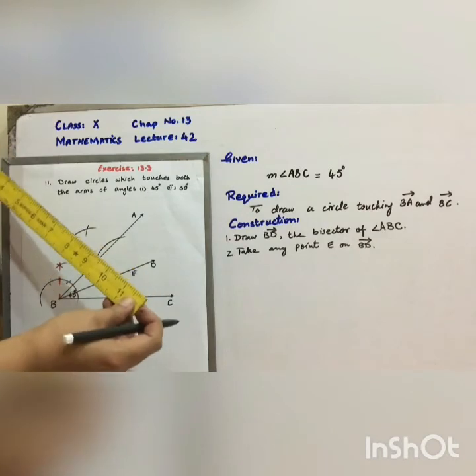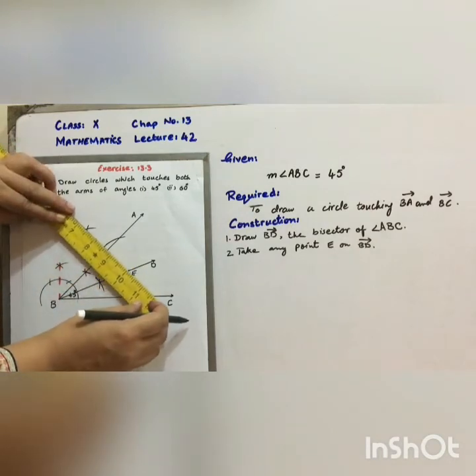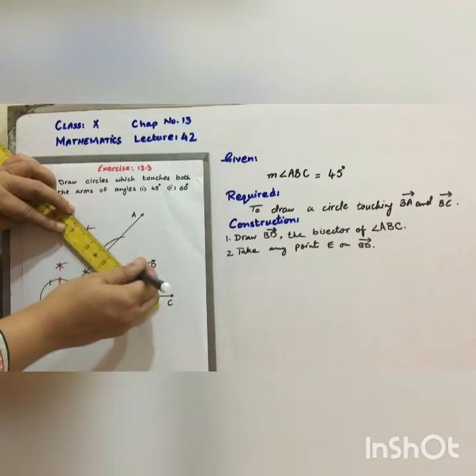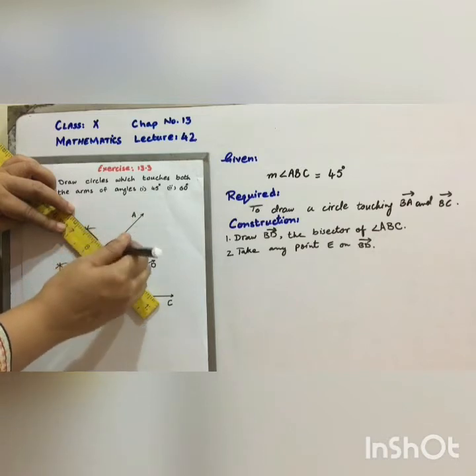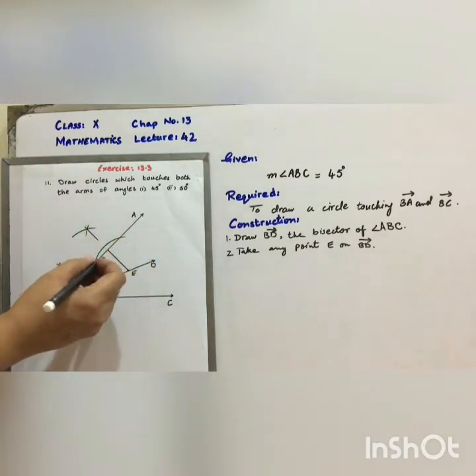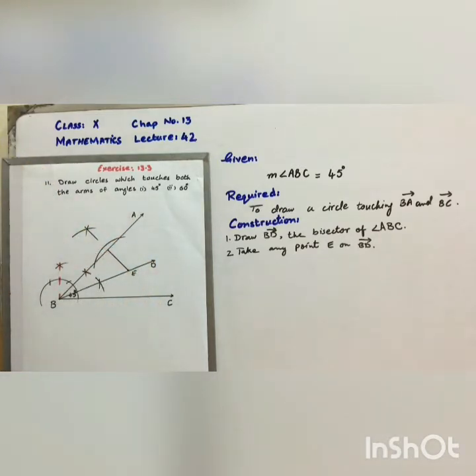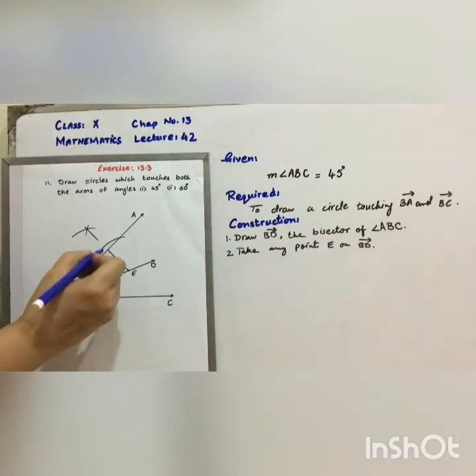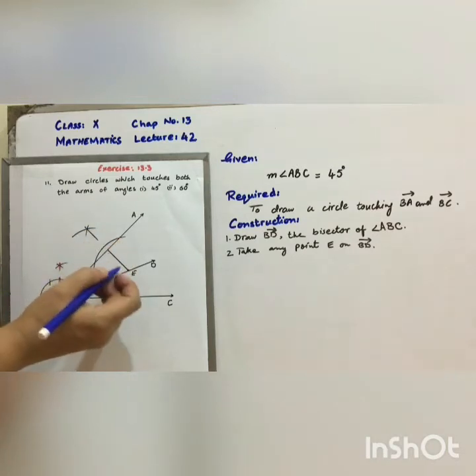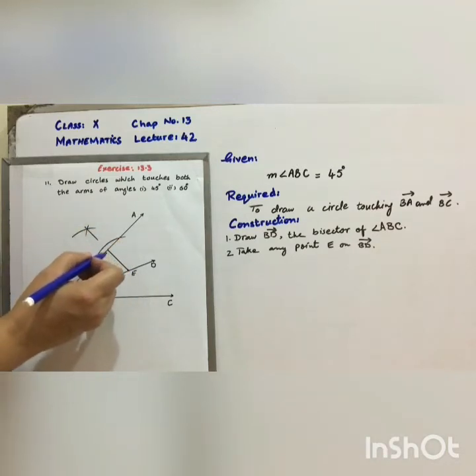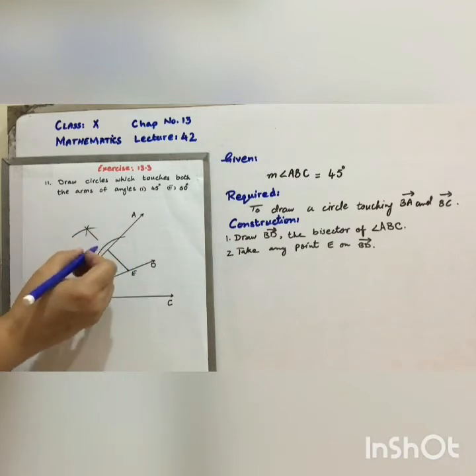Now, joining this point, this new point to E, we will get EL, this point L, where this perpendicular is meeting ray BA. Name it as L.